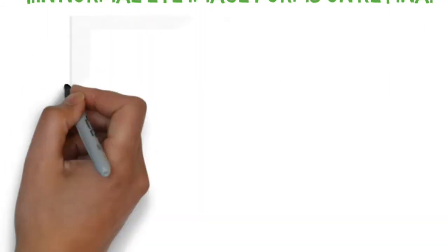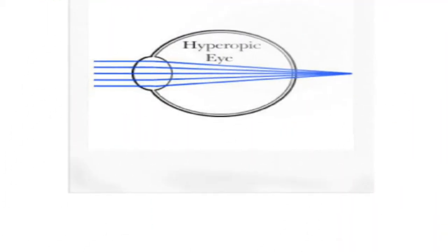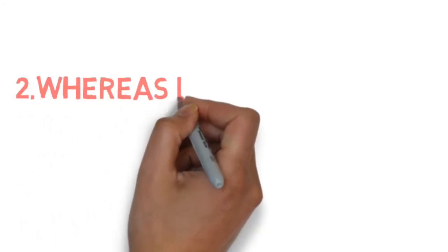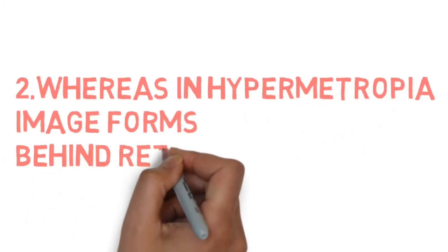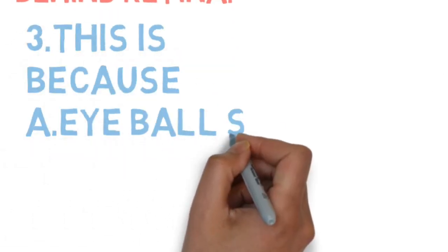Whereas in hypermetropic eye, images are formed behind the retina because focal length of eye lens may increase or sometimes eyeball shrinks in size due to which image is formed behind the retina.